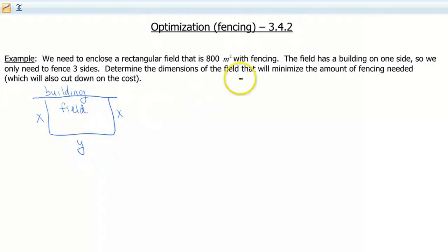So now, what information are we given in the problem? Well, we're given that the rectangular field is 800 meters squared. Well, whenever you see a unit, such as meters squared, you know that that's gonna have to represent area.